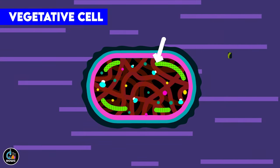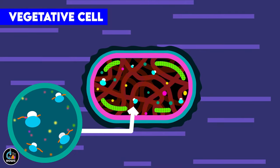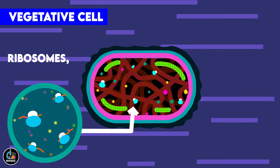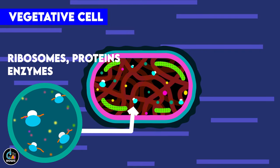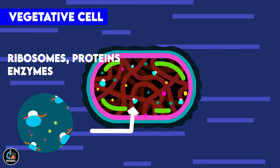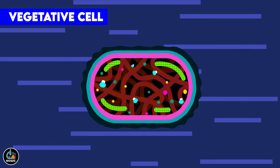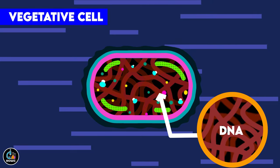The centroplasm contains structures like ribosomes, gas vacuoles, proteins, enzymes, and aggregates of other such molecules. The genetic material DNA is also present in the cytoplasm itself. Being a prokaryote, blue-green algae lacks a well-defined nucleus.